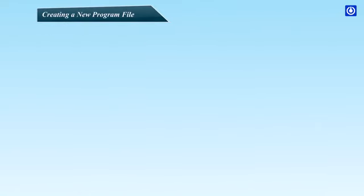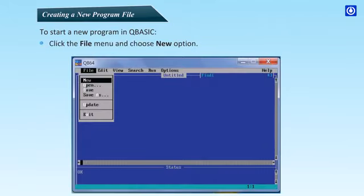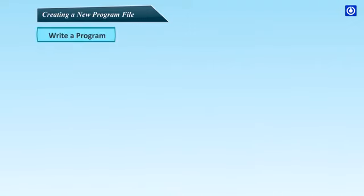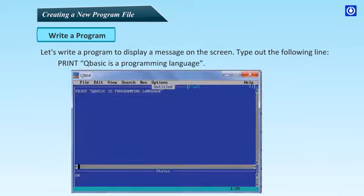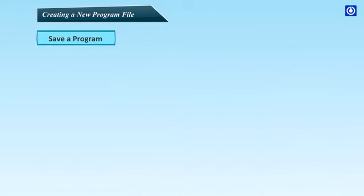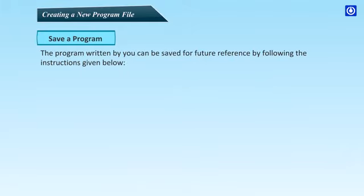Creating a new program file: To start a new program in QBasic, click the file menu and choose new option, or press alt plus F for file menu and then N to select new program. A new QBasic window opens up. Write a program. Let's write a program to display a message on the screen. Type out the following line: Print "QBasic is a programming language".